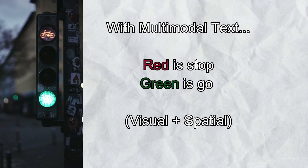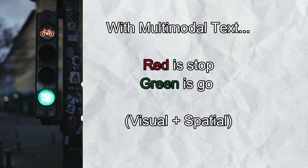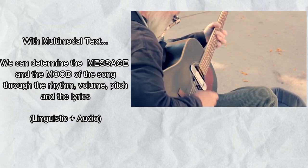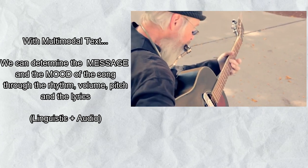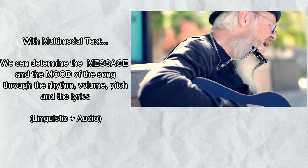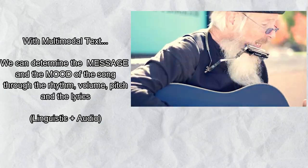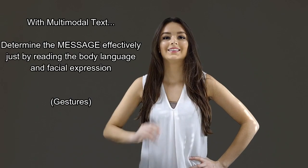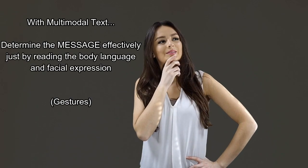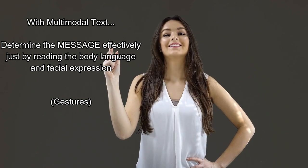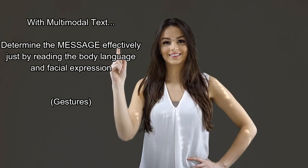With multimodal text, we know that in a traffic light, red means stop and green means go. With multimodal text, we can determine the message and the mood of a song through the rhythm, volume, pitch, and the lyrics. And lastly, with multimodal text, we can determine the message effectively just by reading the body language and facial expression.